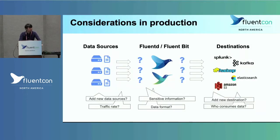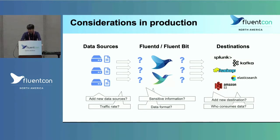Let me start from considerations when you bring FluentD and FluentBit in production. After you finish a solution validation and learn some POC, you will bring FluentD and FluentBit in production, and you will see different behavior in POC and in production. In terms of data source, even if you start small — for instance, 10 to 100 nodes — the number of endpoints could increase easily and traffic rate will increase accordingly.